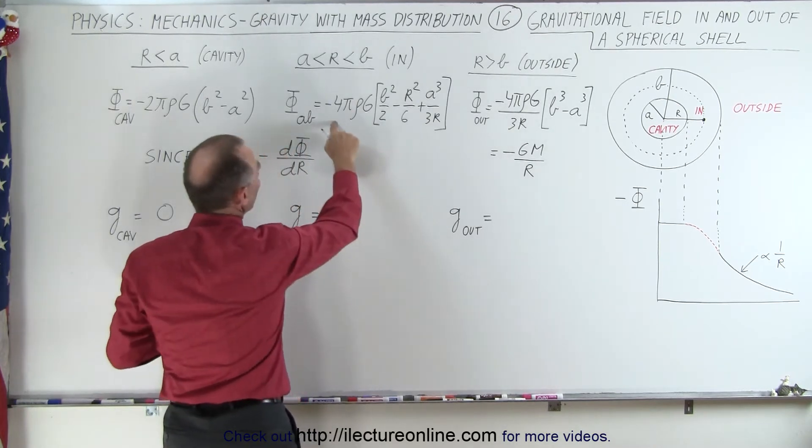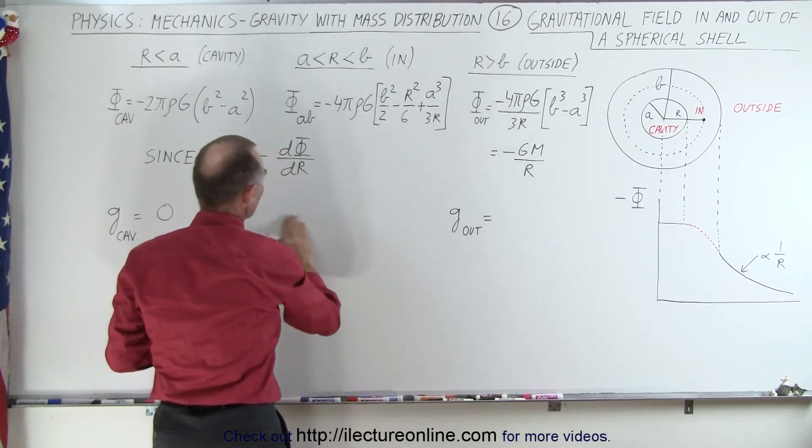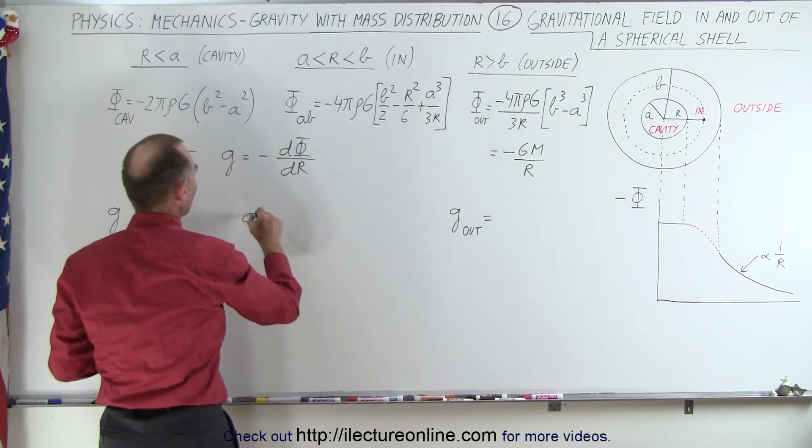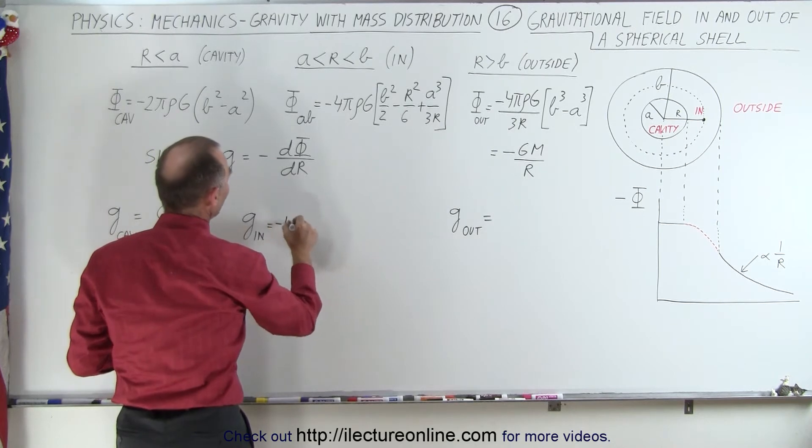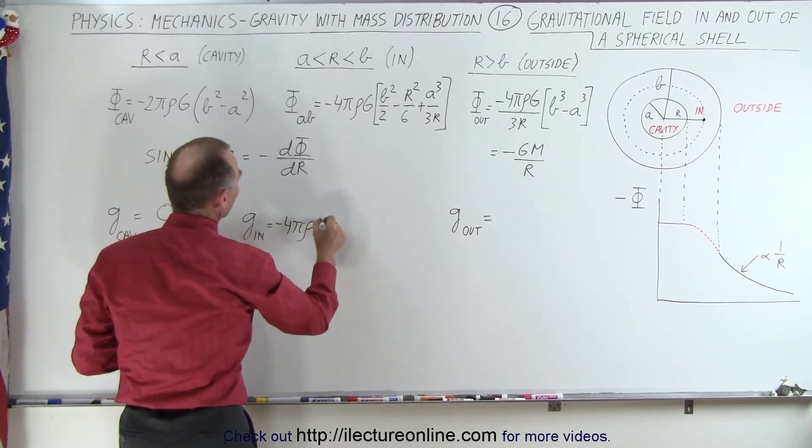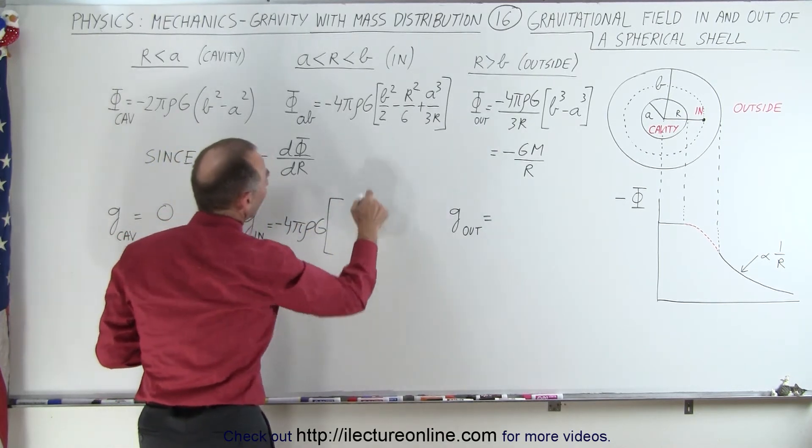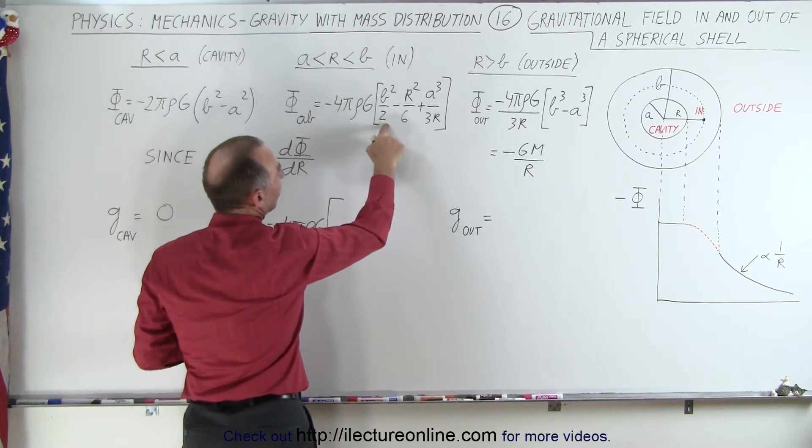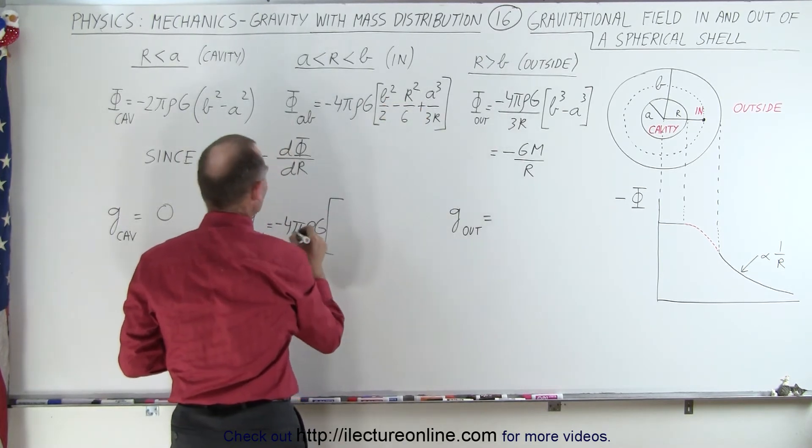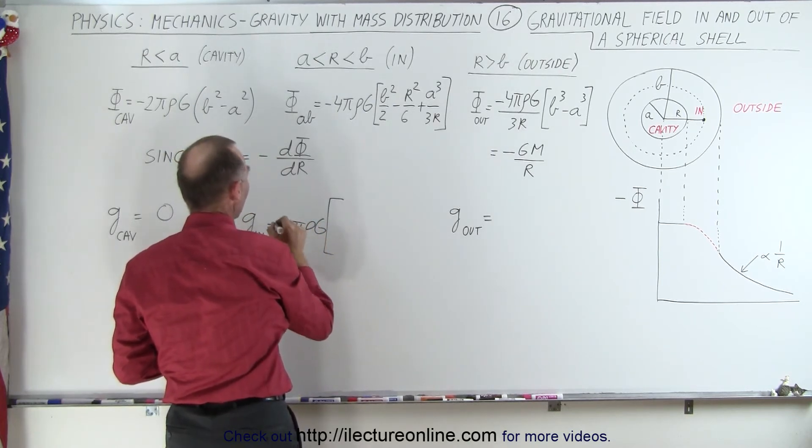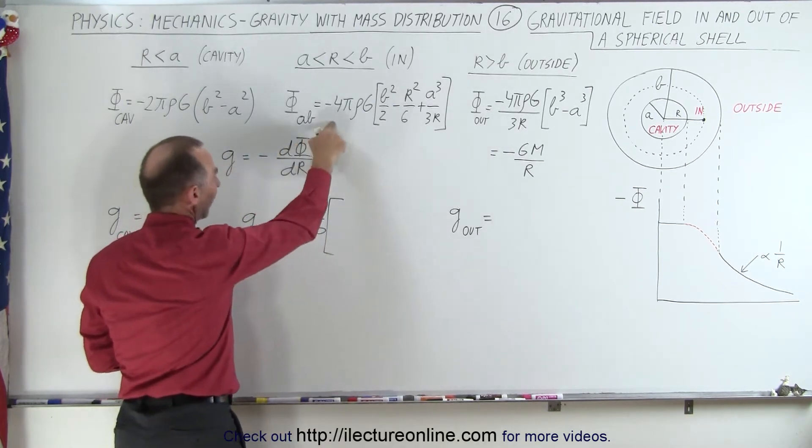So g on the inside the material is going to be equal to minus 4 pi rho g times, well the derivative of b squared over 2, that's going to be zero, but the derivative of this is going to be, and I need to multiply this times a negative, so let's make that into a positive, because it's the negative of that.